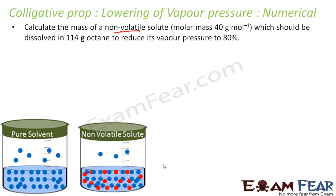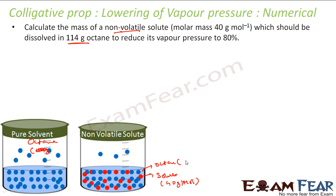The next question: calculate the mass of non-volatile solute octane whose molar mass is 40 gram per mole, which should be added to 114 gram of octane as solvent. The molar mass of octane (C8H18) is: 8×12 plus 18 equals 96 plus 18 equals 114 gram per mole.